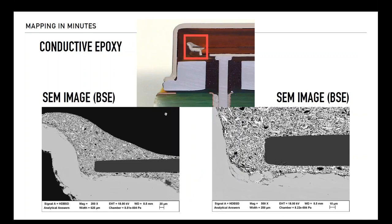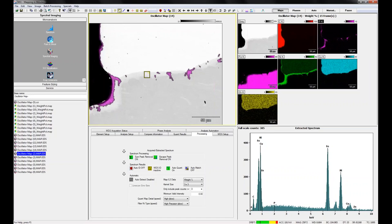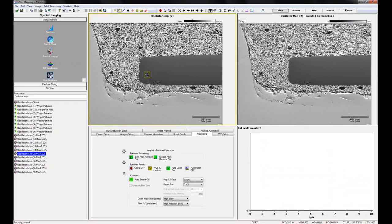Now we're going to look at another example — the conductive epoxy. Here again we have optical images with some SEM images as part of correlative optical microscopy. We see a metal alloy which is the mount for this component, what we suspect to be a quartz crystal, held in place with what appears to be a standard silver-filled epoxy. I'll just work through this in slides now that everybody has seen how the process goes and how quickly we can get information — just a couple of minutes worth of mapping.